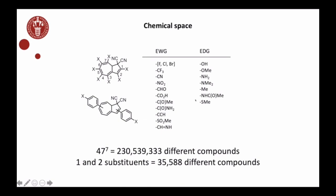There are 47 ligands, including hydrogen, and seven positions, so that's over 100 billion different compounds. If you just do one and two substituents, then you have about 35,000. This is where we decided to start with the one and two substituents, also because they're more synthetically accessible than compounds with more substituents on them.